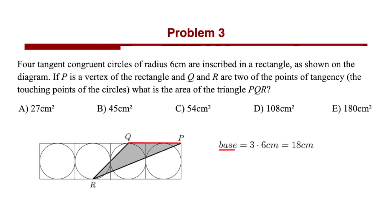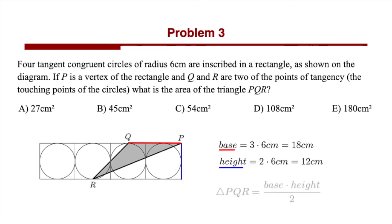The length QP is equivalent to three times the radius. Since all circles have a radius of 6 centimeters, the base equals 6 cm × 3 = 18 centimeters. The height of the triangle — also the height of the rectangle — equals two times the radius: 6 cm × 2 = 12 centimeters. Plugging these into the area formula gives us 18 cm × 12 cm ÷ 2, which yields 108 centimeters squared.